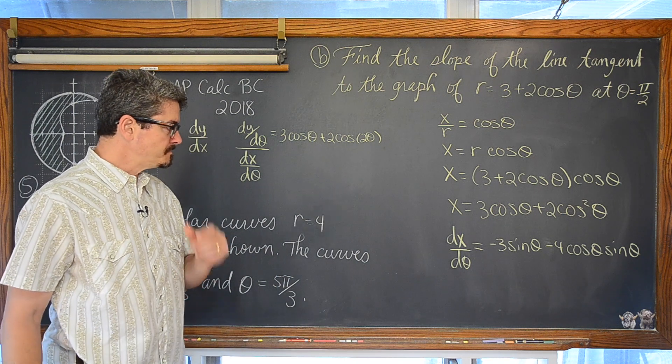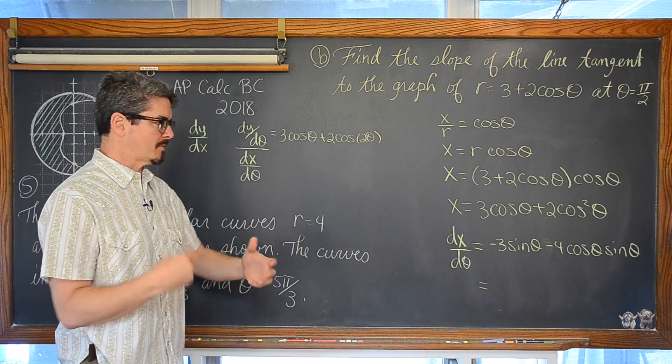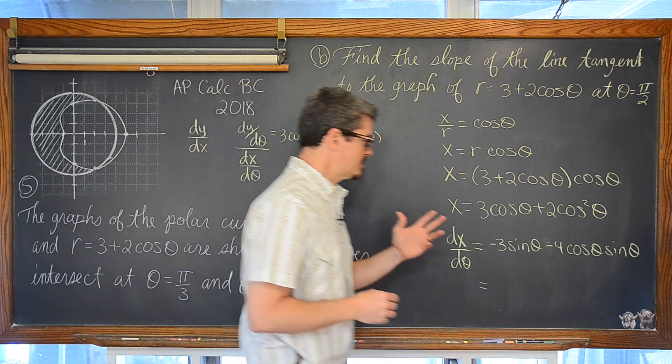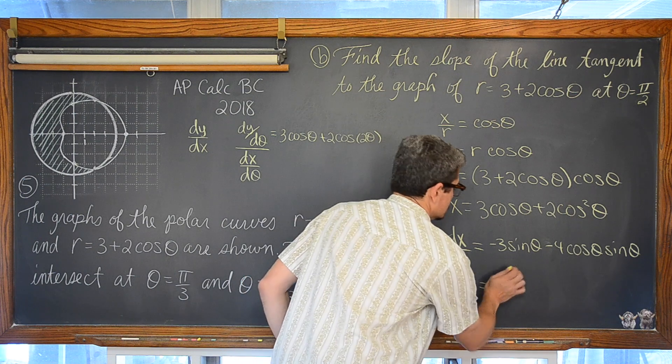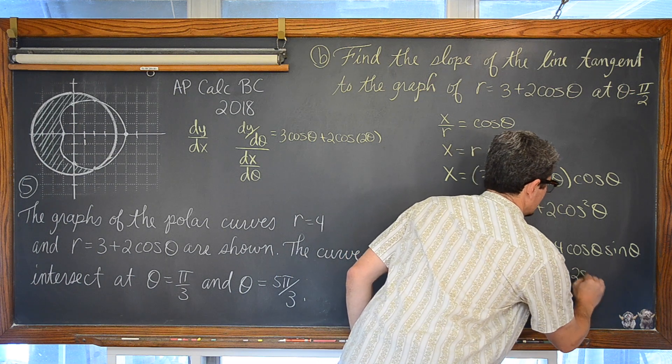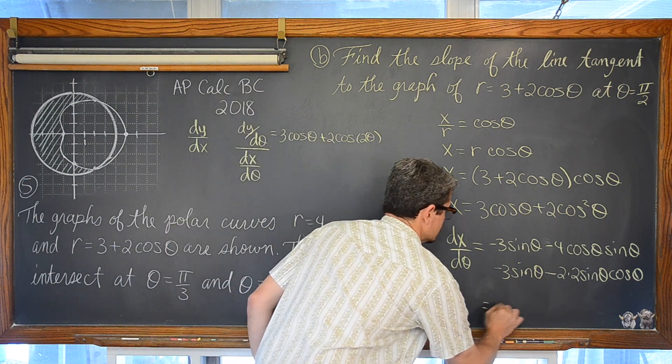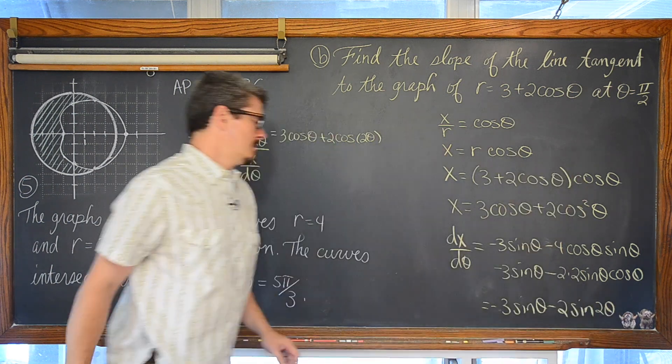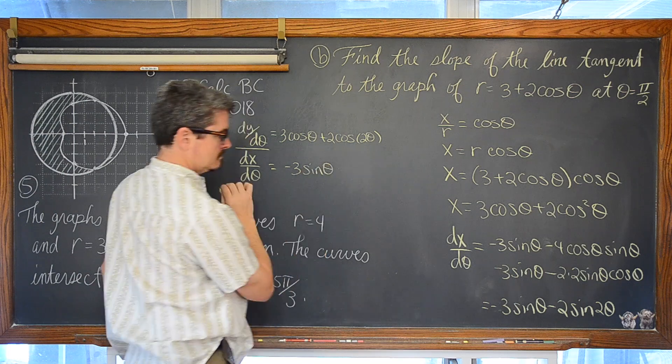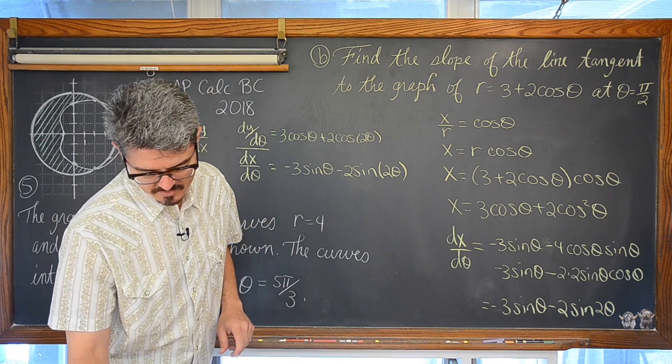Once again, we can... I guess really not necessary here because we've already taken the derivative. But if you choose to, this can be written as negative 3 sine of theta minus 2 times 2 sine theta cosine theta. One more. Just double check. Make sure you don't carry on with a small silly mistake. Excellent!